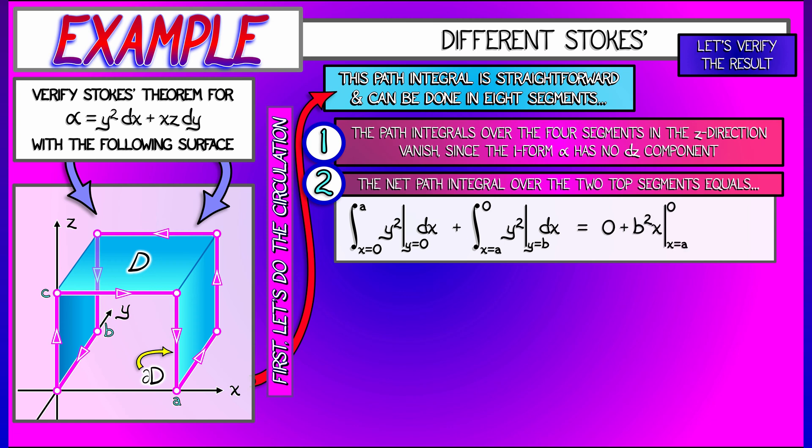Now, that first integral, of course, vanishes. The second integral is the integral of b squared dx. That's really just b squared x, x going from a to zero. That gives me a net result of minus ab squared.